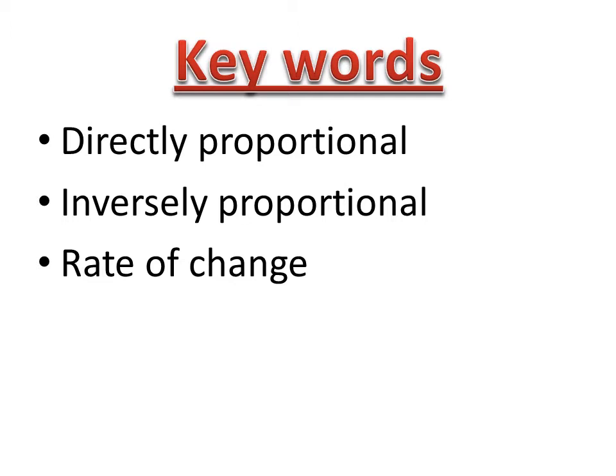It's important you don't use vague terms like positive correlation or negative correlation because that can mean either the graph goes up or down but doesn't describe how it goes up or down. So these are preferred phrases at GCSE Science.